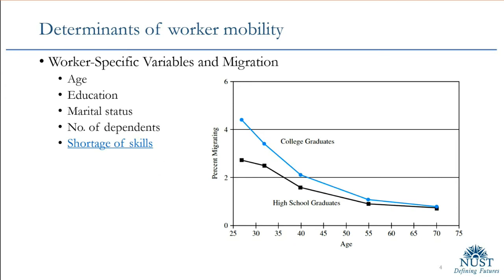The last worker-specific factor is shortage of skills. Canada, Australia, the US, and European countries have lists on their immigration websites of skills that are in short supply. Japan also has high demand for new labor these days. Australia's website is the easiest to find — they list skill shortages, and Canada does too. If you have those skills and can prove them through a diploma or certificate, your entry to Canada or Australia is very easy because they need you.